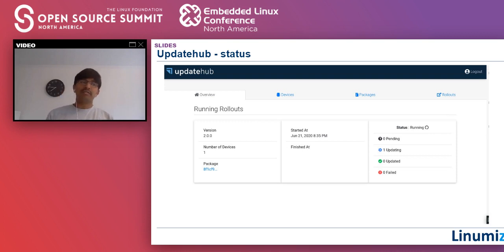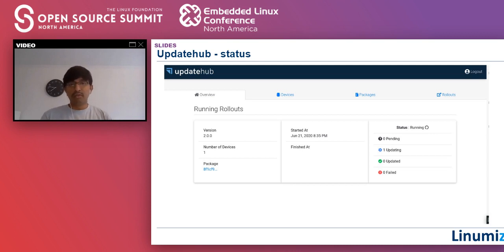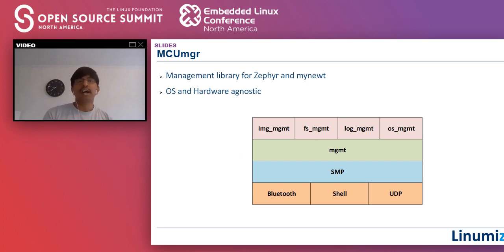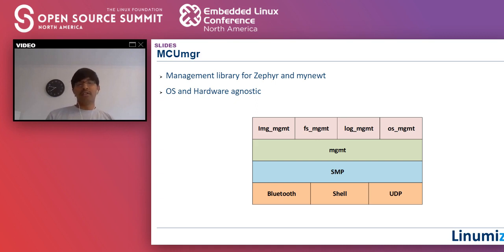Update Hub works by connecting the device to the internet — in this demo via Ethernet, but Wi-Fi or a modem can also be used. The next solution is MCU Manager, developed by Apache for their Mynewt RTOS and ported to Zephyr. Like MCU Boot, it is not hardware-dependent or OS-dependent, so it can be ported to any RTOS. We will see how it works with Zephyr OTA software update.